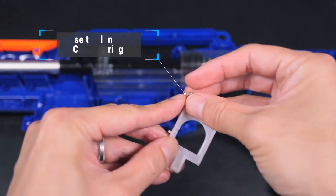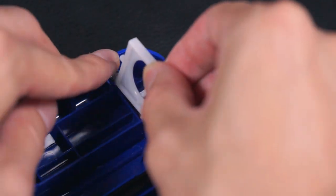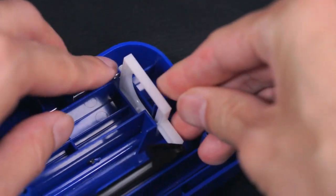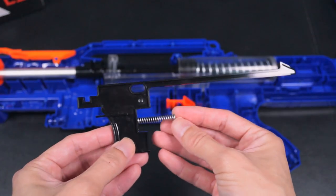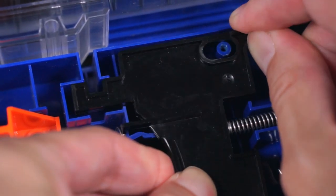Slot in the catch plate and make sure that the spring post sits in the catch spring. Slot the trigger spring in the trigger spring post as shown, followed by the trigger setup into the trigger post of the shell.